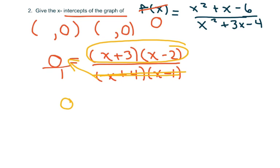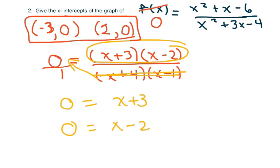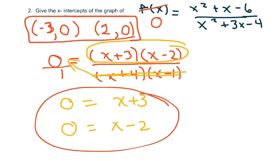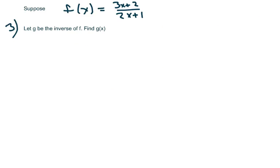So we're setting this 0 to x plus 3 and also to x minus 2. That would leave x is negative 3, and x is 2. So those are your x-intercepts. You're just solving here for x.